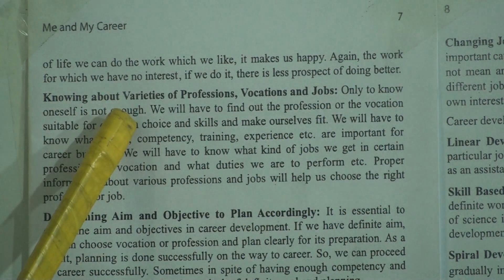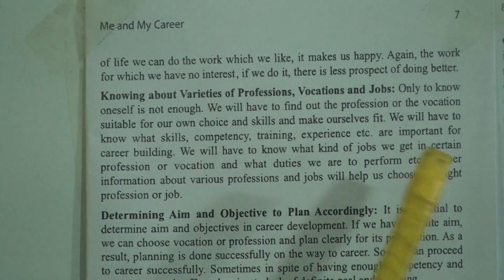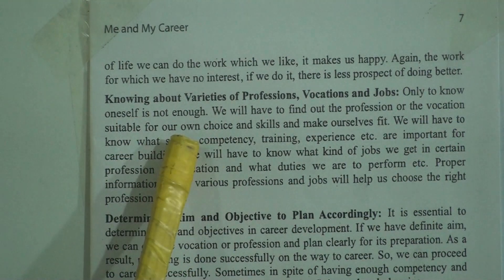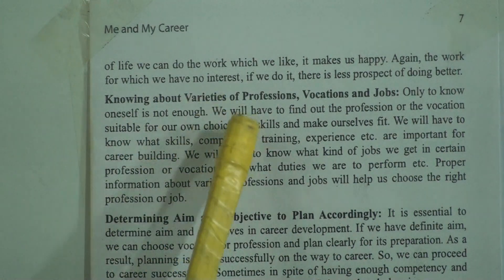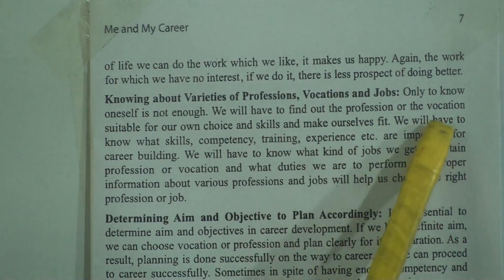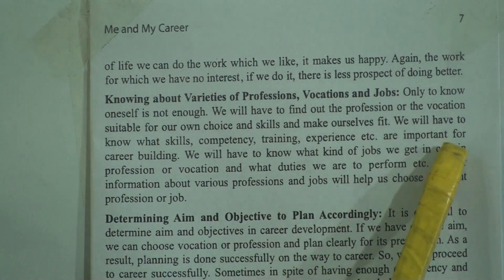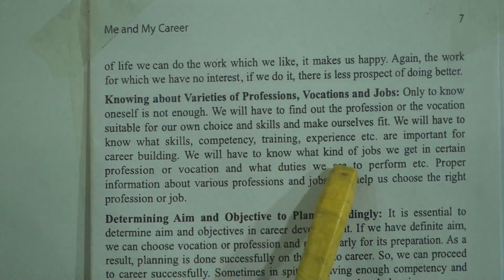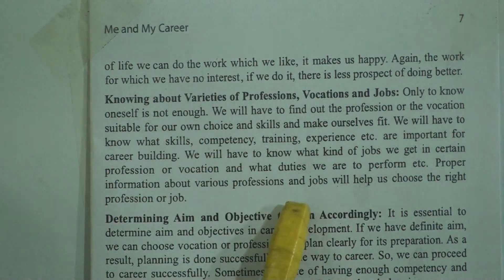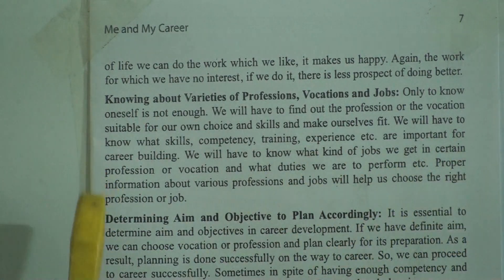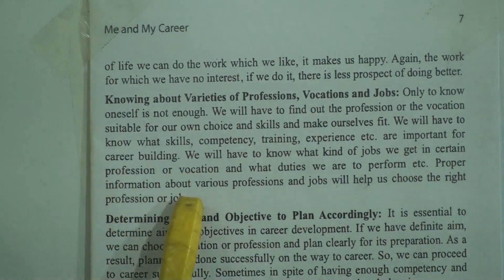Stage 2 — Knowing about various varieties of professions, vocations and jobs: only to know oneself is not enough. We will have to find out the profession or vocation suitable for our own choice and skills and make ourselves fit. We will have to know what skills, competency, training, experience, etc. are important for career building. We will have to know what kinds of jobs we get in a certain profession or vocation and what duties we are to perform. Proper information about various professions and jobs will help us choose the right profession or job.